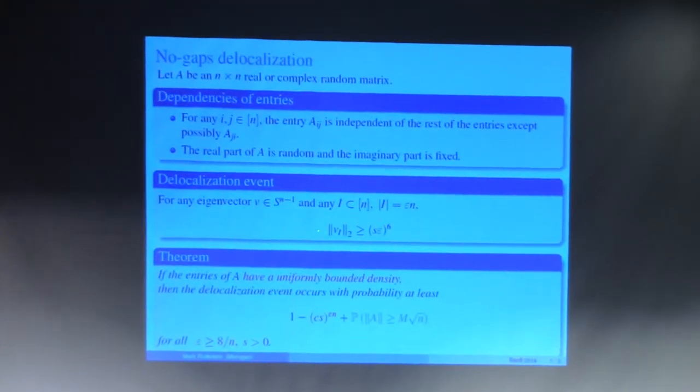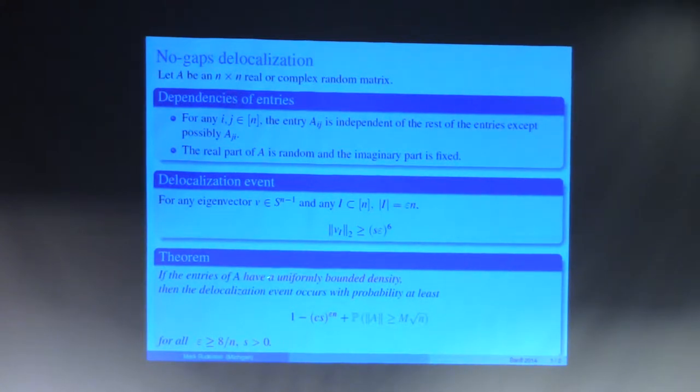We're going to show that this delocalization event is likely, and there are two different formulations. One: if the entries have a uniformly bounded density, then this event is very likely, so the probability of failure is exponential in epsilon n, plus the probability that the norm of the matrix is large. This event has very small probability if the fourth moments are uniformly bounded.